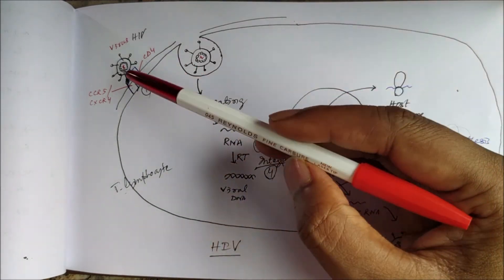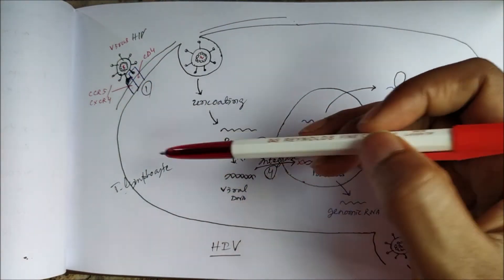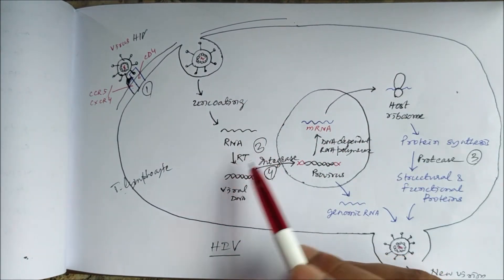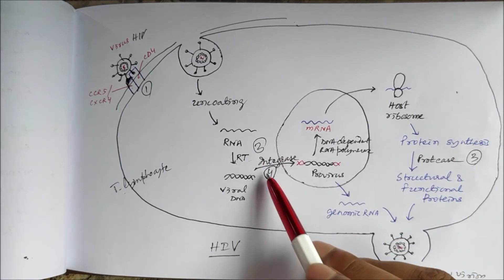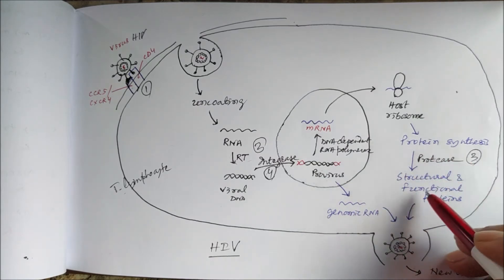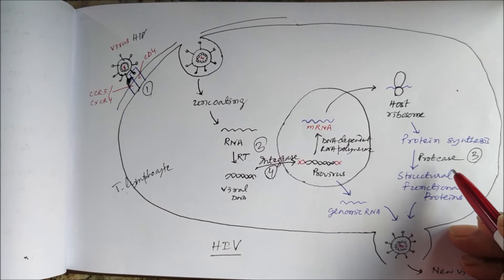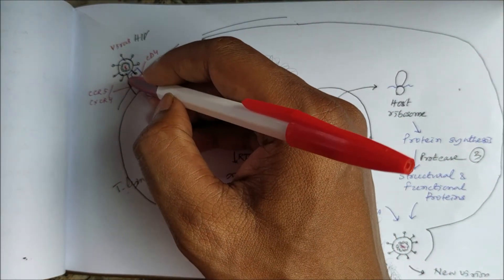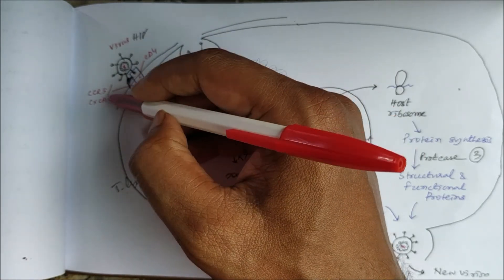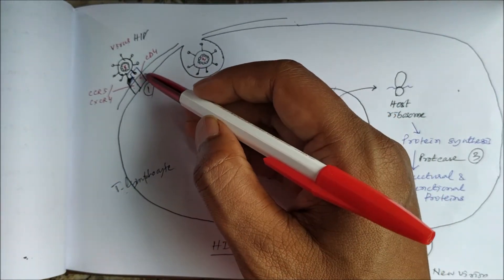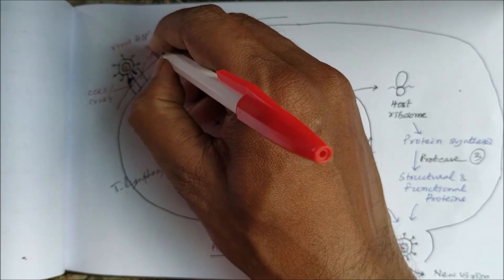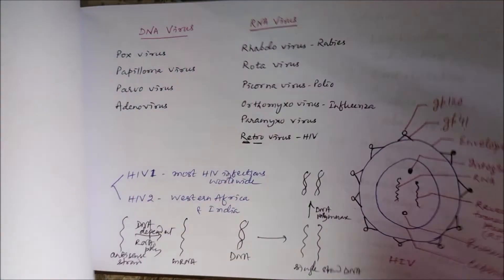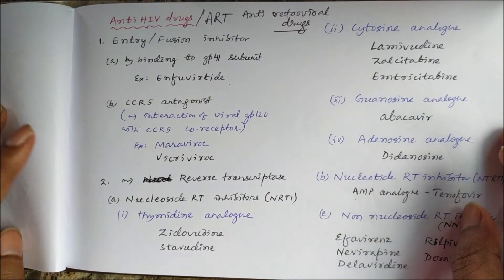Anti-HIV drugs can target the CCR5 co-receptor or glycoproteins to block entry, target reverse transcriptase to block reverse transcription, target integrase to prevent integration of viral DNA with host cell DNA, or target protease. These drugs are called anti-HIV or antiretroviral drugs and form part of antiretroviral therapy (ART).